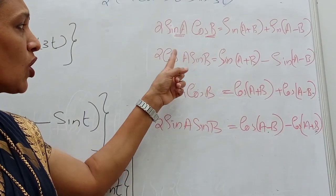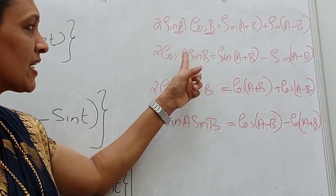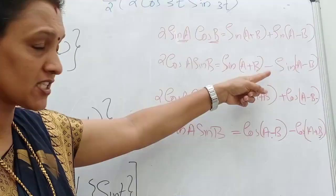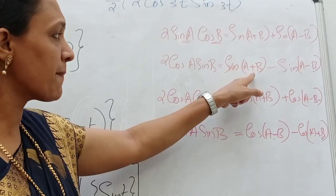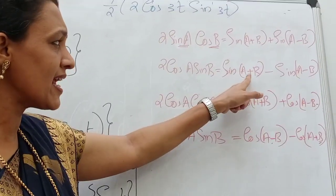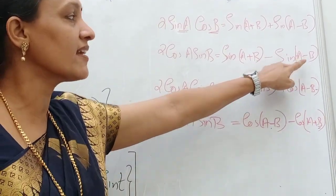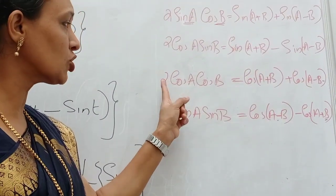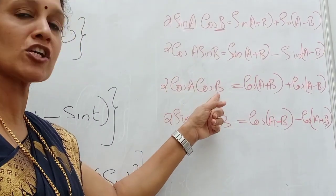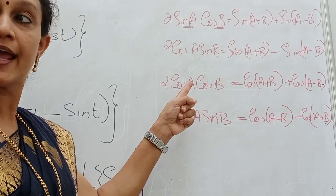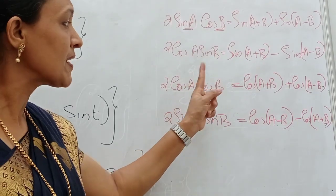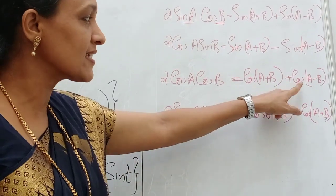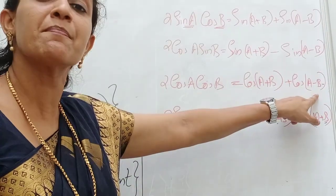For the product 2 cos A sin B, this can be converted to sine A plus B minus sine A minus B. The third formula: if you have a product like 2 cos A cos B, that is equal to cos A plus B plus cos A minus B. This is the corresponding sum formula.